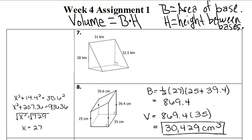Alright guys, week 4, assignment 1. This is continuation of volume. So here we have volume equals big B times big H, where big B equals the area of the base, and big H equals the height between bases.